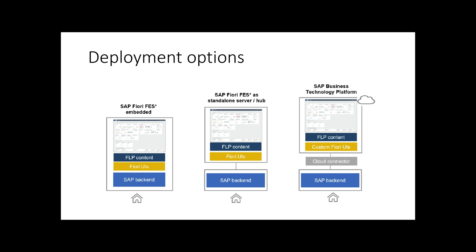SAP BTP model. In this scenario, the SAP front-end server is deployed in the cloud as SAP Fiori cloud, which is integrated with on-premise applications using the cloud connector. This option is possible for an on-premise system landscape with all SAP Fiori front-end server components deployed in the cloud on the SAP Business Technology Platform. These three deployment options have pros and cons and a detailed analysis must occur before deciding on the best possible model for your SAP landscape.